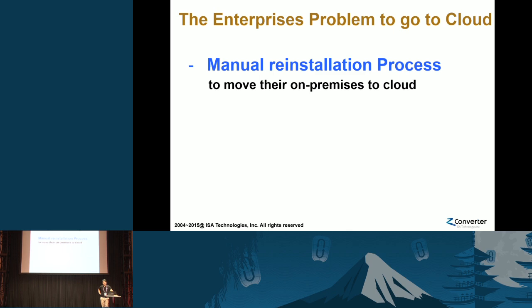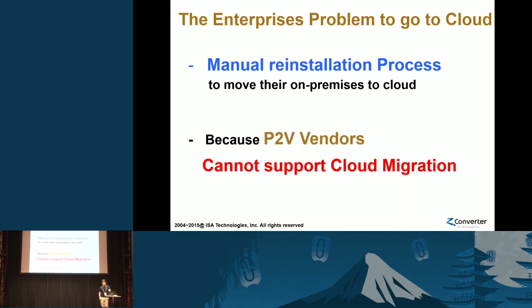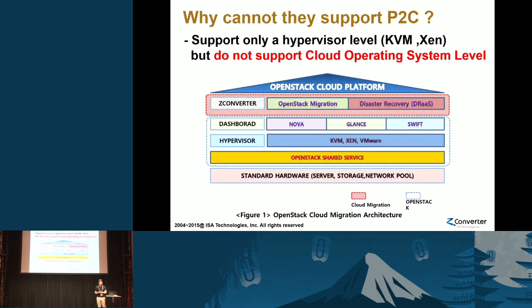Do you know why? Some people think we're still using the physical to virtual migration technology in order to move on-premises to the OpenStack cloud. But that is not true. P2V vendors cannot support cloud migration. Let's think about why they cannot support the physical to cloud migration.